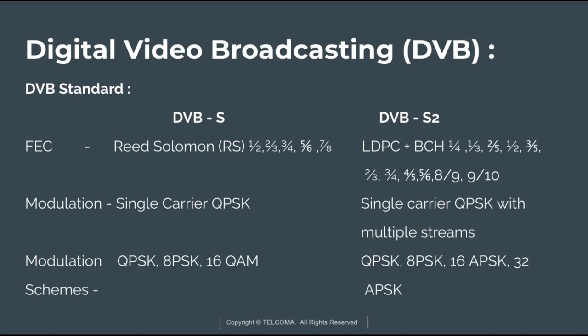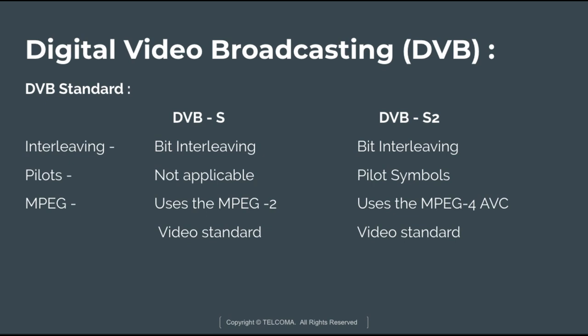For modulation: in DVB-S, single carrier QPSK (Quadrature Phase Shift Keying) is used. In DVB-S2, single carrier QPSK with multiple streams is used. The co-modulation schemes in DVB-S are QPSK, 8PSK, and 16QAM (Quadrature Amplitude Modulation), whereas in DVB-S2 the schemes are QPSK, 8PSK, 16APSK (Amplitude Phase Shift Keying), and 32APSK.